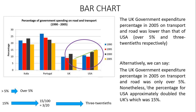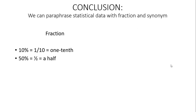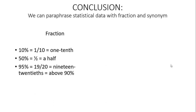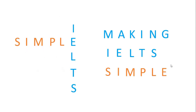In conclusion, we can paraphrase statistical data with fractions and synonyms. For fractions: 10% = 1 per 10, or 1 tenth; 50% = 1 per 2, or a half; 95% = 19 per 20, or 19 twentieths, or above 90%. For synonyms: 'reduced by half' has the same meaning as 'halved'; 'increased by twofold' has the same meaning as 'doubled.' Thank you for watching until the end, and see you in my other videos.